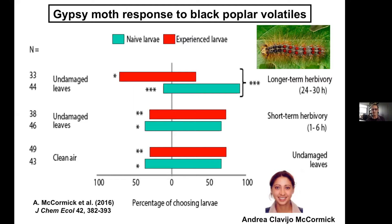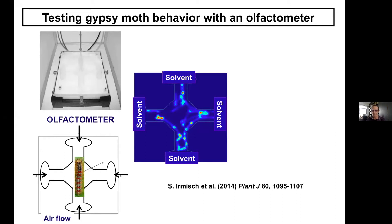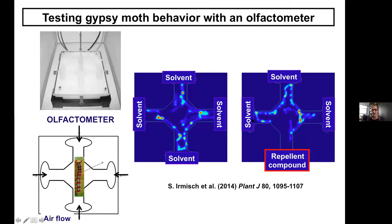If solvent or air blew over solvent in all four directions, caterpillars didn't really choose where to go. But if a repellent compound came from one arm, they would clearly avoid that arm and spend more time in others. Doing these experiments, Andrea showed that different categories of volatiles produced different responses. Green leaf volatiles — C6-based fragments of fatty acids, lipoxygenase products of C18 fatty acids — were mostly attractants to the larvae. Hexanol, hexanoacetate, and hexanal are the major ones.